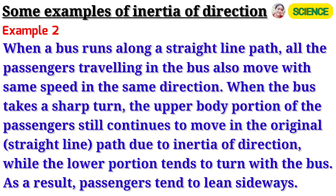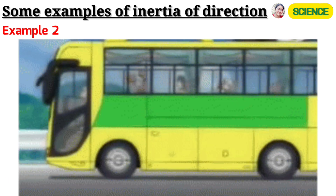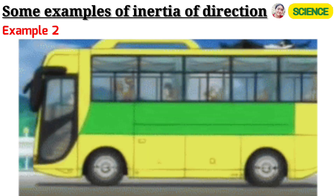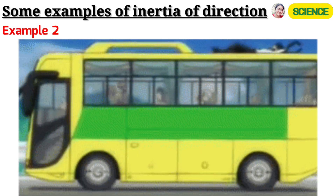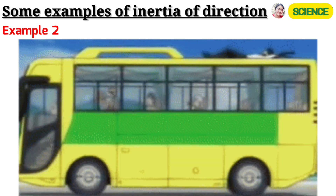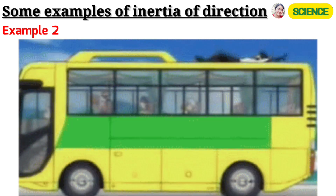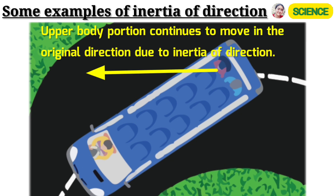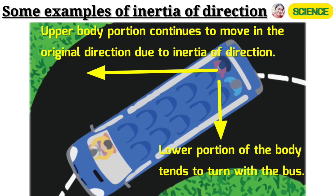Example 2: When a bus runs along a straight line path, all the passengers travelling in the bus also move with the same speed in the same direction. When the bus takes a sharp turn, the upper body portion of the passengers still continues to move in the original path due to inertia of direction, while the lower portion tends to turn with the bus. As a result, passengers tend to lean sideways.